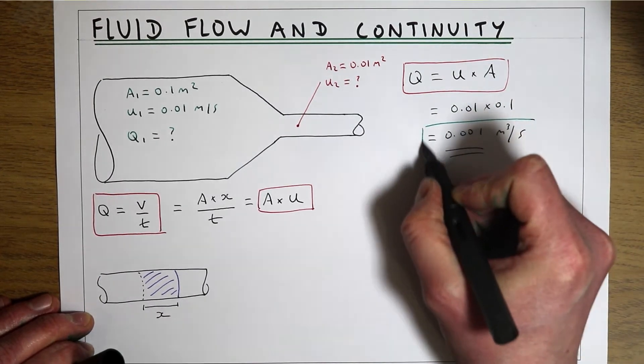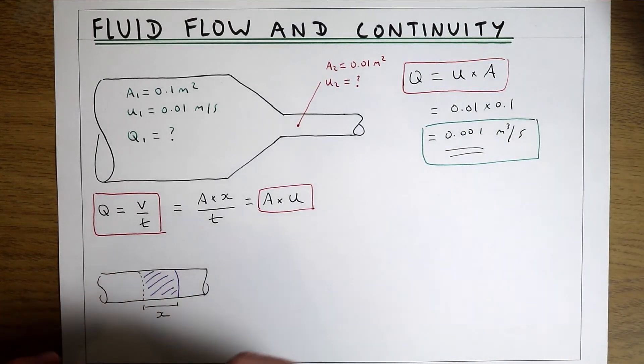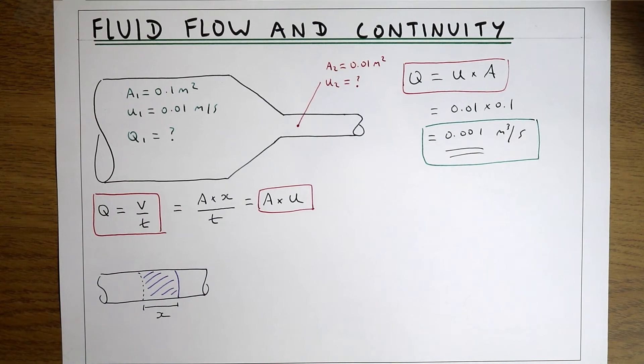We've been able to get that flow just by multiplying the cross-sectional area of the pipe with the velocity of the fluid.